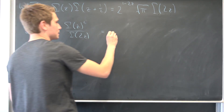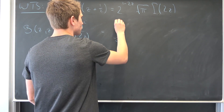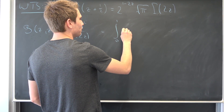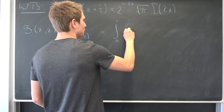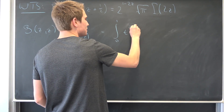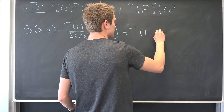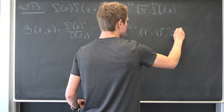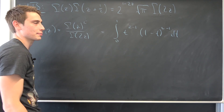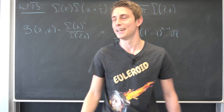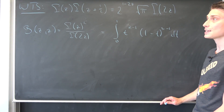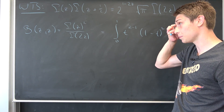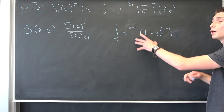Beta of z comma z is nothing but the integral from 0 to 1 of t to the z minus 1 times 1 minus t to the z minus 1 dt. I'm not certain if I already introduced the other definition of the beta function up until now, except for this one right here.